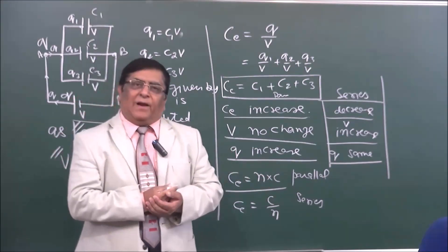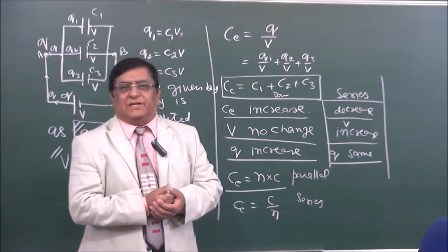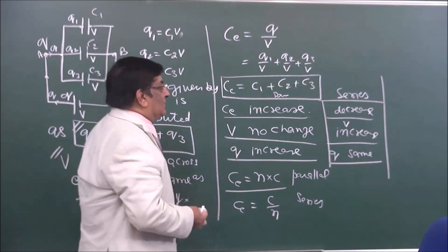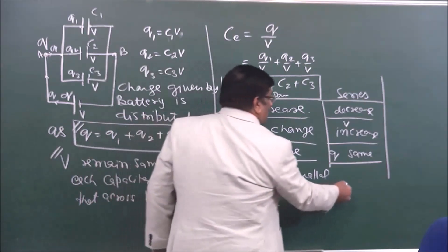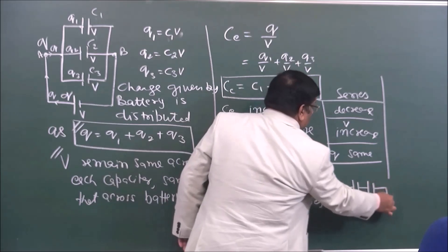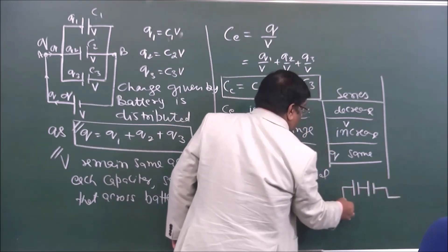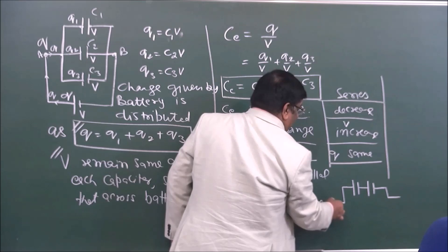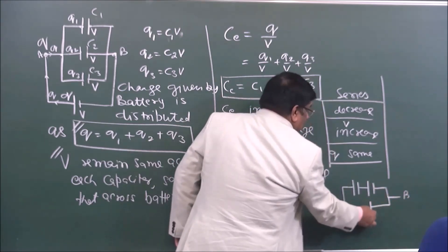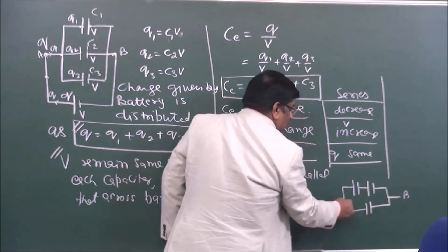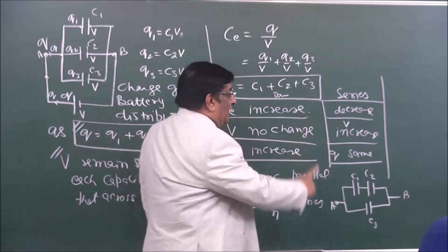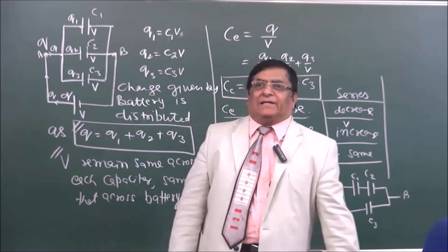This is all about series and parallel. We can also have certain circuits which are a combination of the two — a mixed combination. For example: C1, C2, and C3 are connected between A and B. In which form — series or parallel?